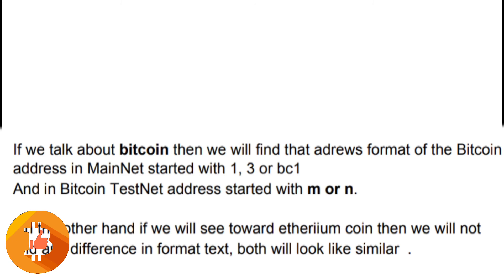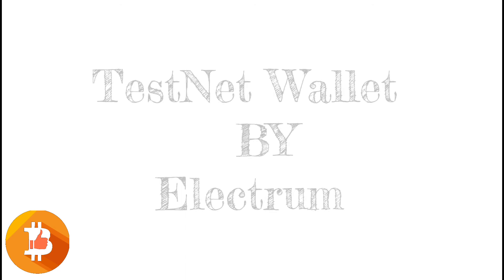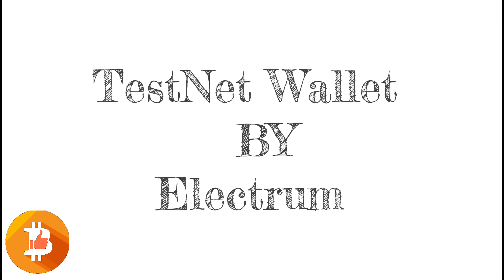On the other hand, if we look at Ethereum, we will not find any difference in format — both mainnet and testnet addresses look similar, which can cause confusion. But you can be sure by the word mentioned in the wallet, whether it says mainnet or testnet. The best option to get a Bitcoin testnet address is to use the Electrum testnet wallet, which is available to create a test wallet for Bitcoin and lets you easily create a number of testnet Bitcoin addresses.